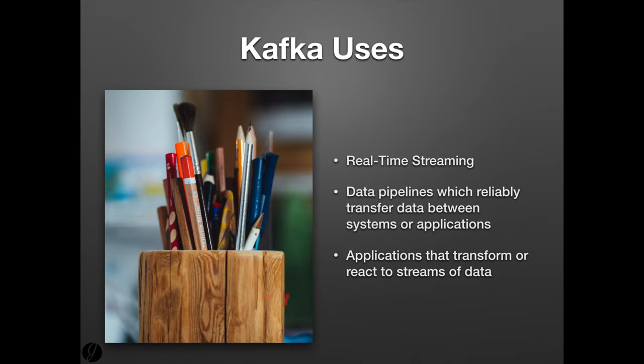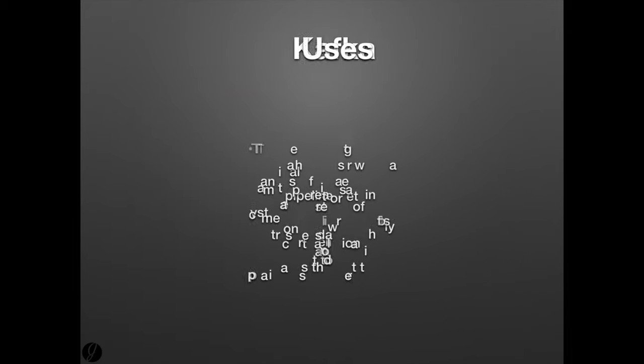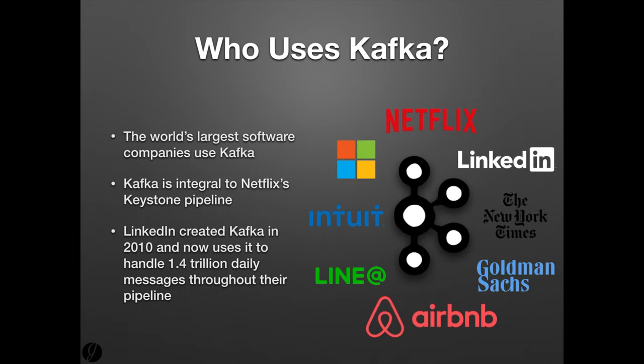Kafka is typically used in the industry to provide real-time streaming solutions, reliable data pipelines, or to implement applications that react to streams of data. Think about something like a messaging app — you might need to transfer a message between two devices, but you also might want to have a history of that stream. Kafka is used by some of the largest tech companies in the world in different ways. LinkedIn originally created it to service their timeline and feed pipeline, but it has grown as an open source project to include many other features used by many other groups.